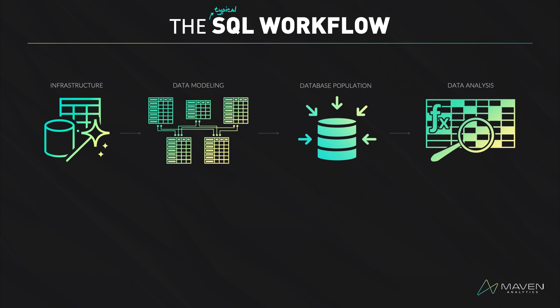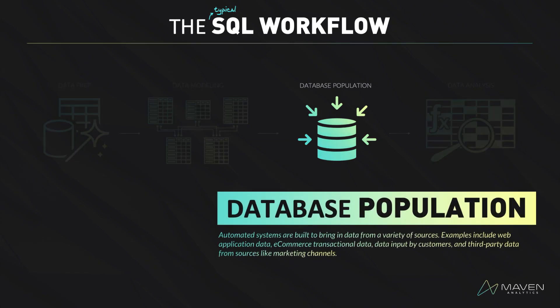After the data model is set up, we're ready for the next step, which is populating our tables with data. In most cases, this is an ongoing process that sets up automation to bring in data from a variety of sources. You might get information from the use of your web application, from e-commerce transactional data, from information input by your customers, or potentially even third-party sources like marketing channels. This stage is typically handled by your data engineers or database administrators. There are also situations where people outside of the data team are responsible for this — it's not uncommon to have back-end engineers or full-stack engineers populating your tables with data. Whoever's working on this, it's all about setting up the infrastructure to collect data in real time in an automated fashion on all of the things you need to run your business.